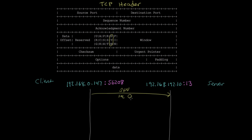The server is going to respond by acknowledging that, sending a packet in the other direction with the acknowledgement bit set. It uses the acknowledgement number to tell the client the next sequence number it expects, which is one — because the client said its sequence number is zero. In this same packet the server also sets its own SYN bit and sends its own sequence number, which I'll just say is zero, though again it would normally pick a random number.